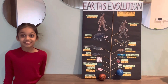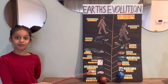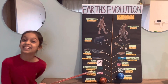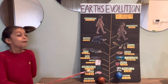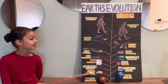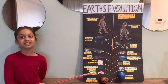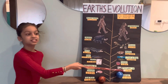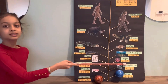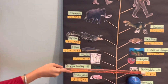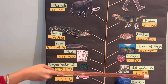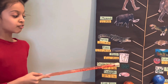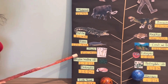Then came the first living organisms on our Earth. Do you know what they were? They were prokaryotes, which formed 3.5 billion years ago. And then came photosynthetic cells. Thanks to this, plants have photosynthesis. These cells formed 3.2 billion years ago.